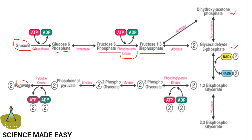In the next step, the enzyme glyceraldehyde 3-phosphate dehydrogenase transfers one hydrogen from glyceraldehyde 3-phosphate to nicotinamide adenine dinucleotide to form NADH + H⁺, and then adds a phosphate to the oxidized glyceraldehyde 3-phosphate to form 1,3-bisphosphoglycerate.